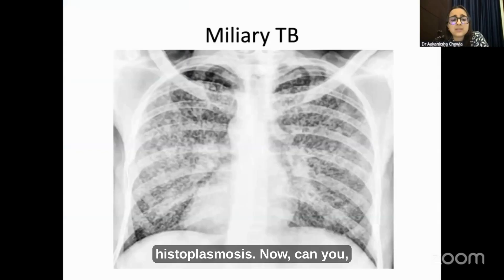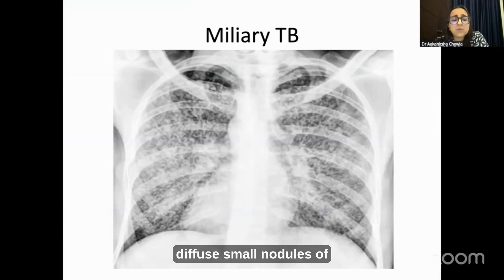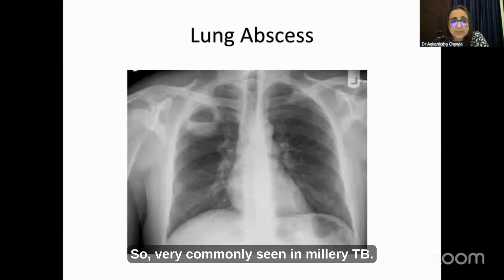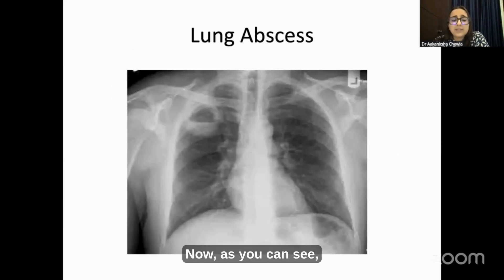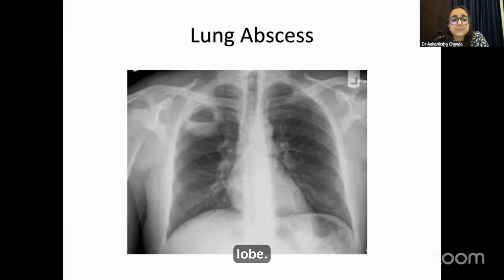In this X-ray you can see bilaterally diffuse small nodules of 1 to 3 mm in size — very commonly seen in miliary TB. The following X-ray shows a lung abscess in the right upper lobe.